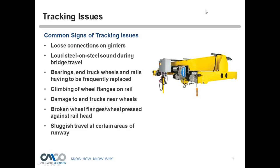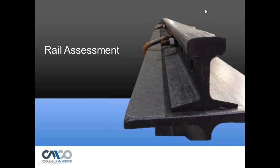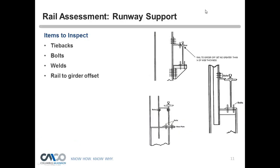If we suspect a tracking problem, we want to start with a rail assessment. We'll begin with the runway or the support structure that the runway is mounted on. The items we need to inspect are tiebacks, bolts, welds, and rail-to-girder offset.